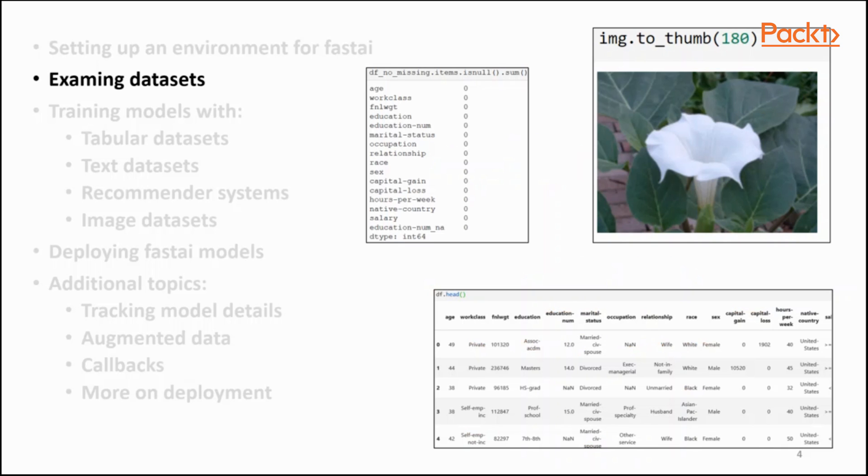Now that you have a Fast AI environment set up, it's time to explore some datasets. In the second chapter of the book, you will start by learning about the extensive set of curated datasets that Fast AI provides.